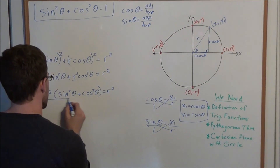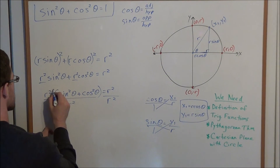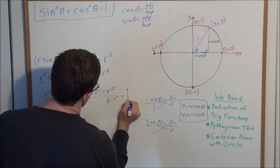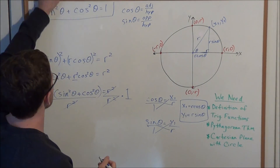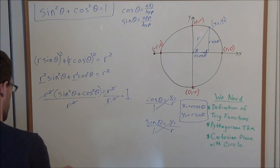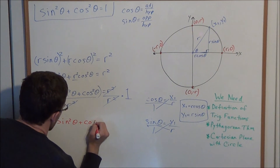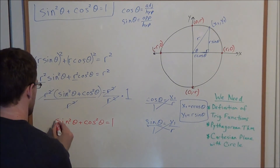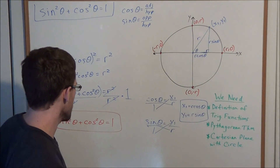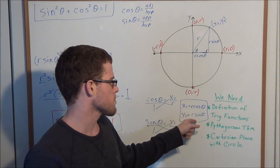Now we can divide both sides by r². The r² over r² cancels on the left-hand side and also cancels on the right-hand side, leaving just 1. This allows us to write the final result — the Pythagorean identity: sine squared theta plus cosine squared theta equals 1, no matter which radius we choose when building our circle on the Cartesian plane. When they say Pythagorean identity, this is just a way to restate the Pythagorean theorem using polar coordinates.